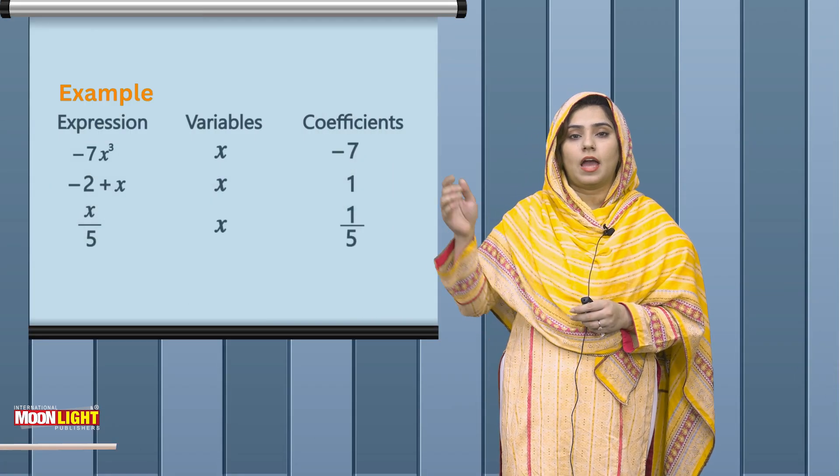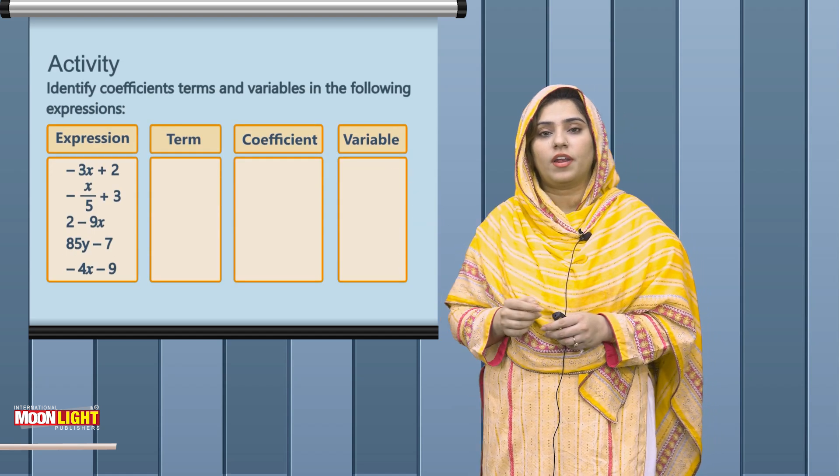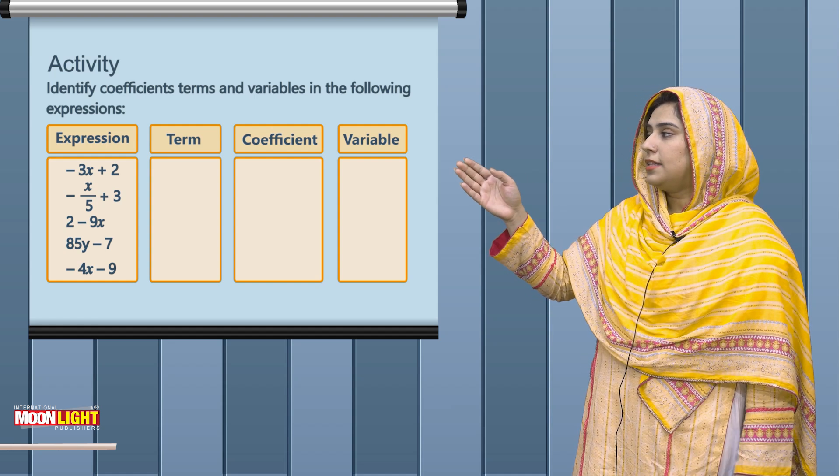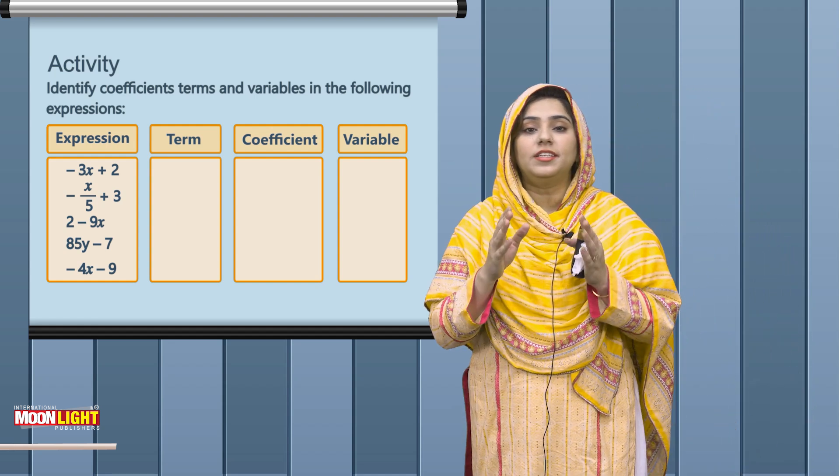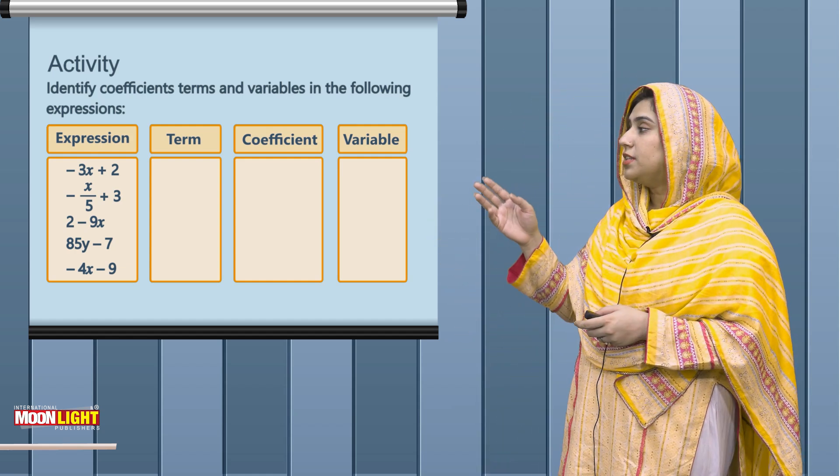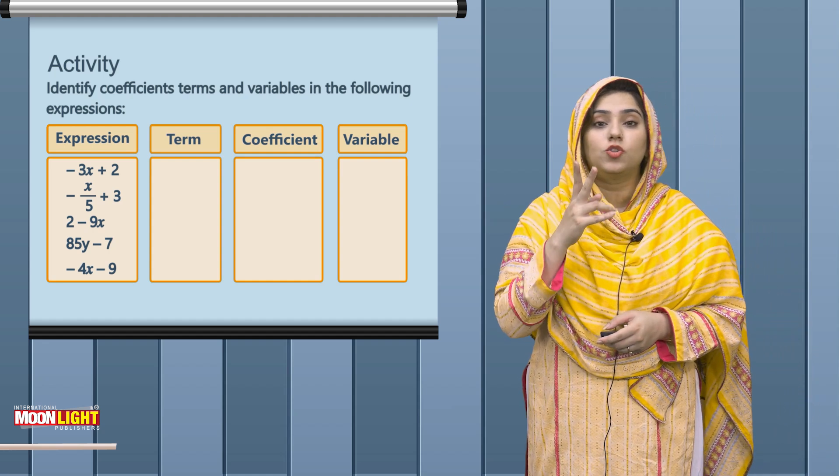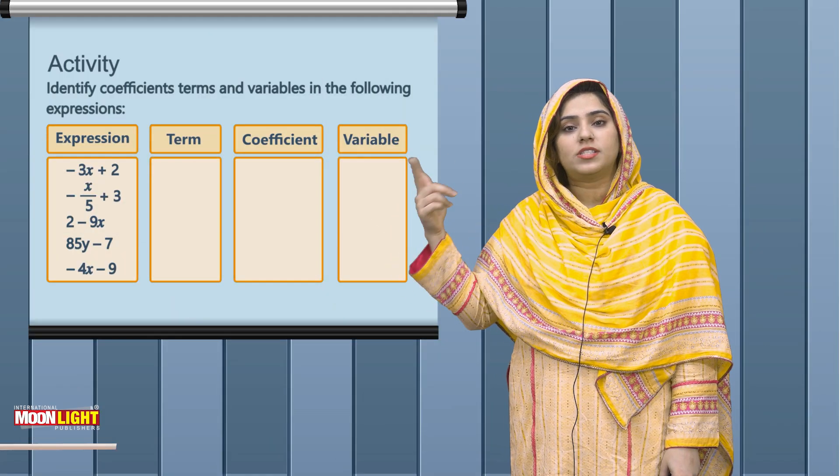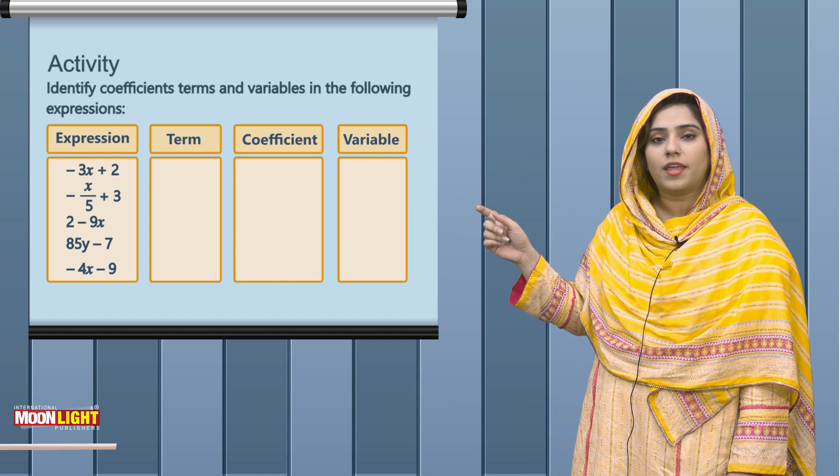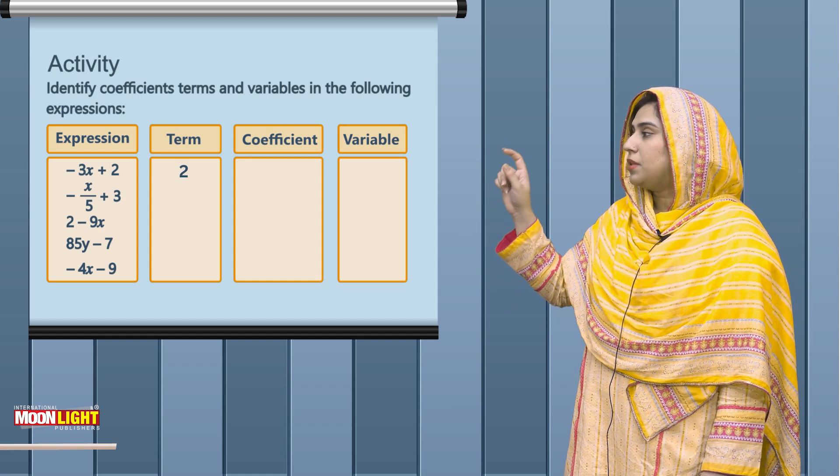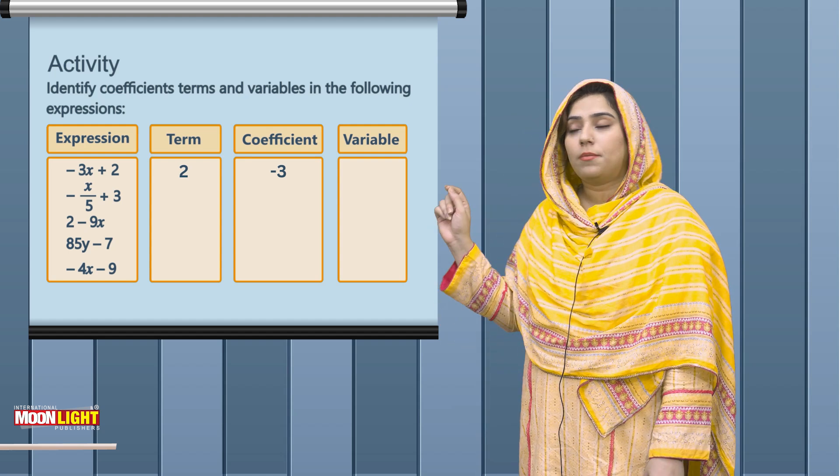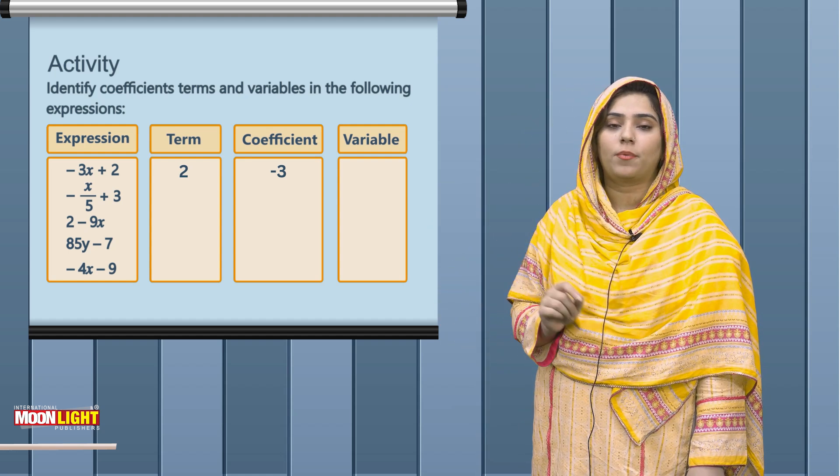Students, you have to practice this activity. First, you have an expression of minus 3x plus 2. You have to tell how many terms are used. Then you have to tell what coefficient and what variables are. In minus 3x plus 2, there are two terms - one coefficient variable term and one constant term. The coefficient is minus 3, and the variable is x.